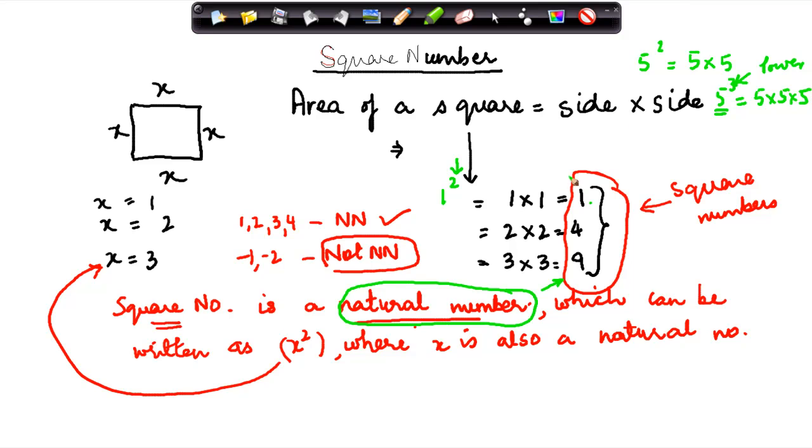This is called the power, and in square basically the power is 2. So 4 can also be written as 2 square, 9 can be written as 3 square. Now square number is a natural number, so all these three numbers are natural numbers. So when I was giving you this, this was just illustrative in terms of what are natural numbers. These are not necessarily the square numbers. So these are natural numbers which can be written as x square.